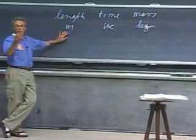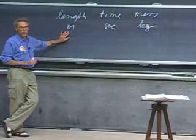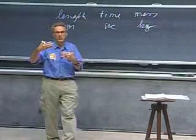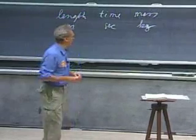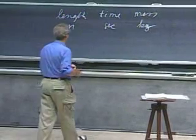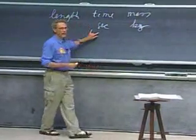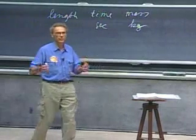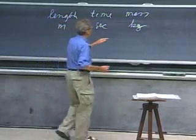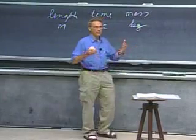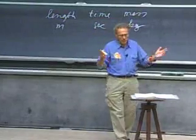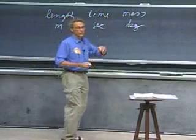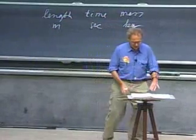Astronomers even use the astronomical unit, which is the mean distance between the earth and the sun, and they use light years, which is the distance that light travels in one year. We have milliseconds, microseconds, days, weeks, hours, centuries, months — all derived units. For mass, we have milligrams, we have pounds, we have metric tons.